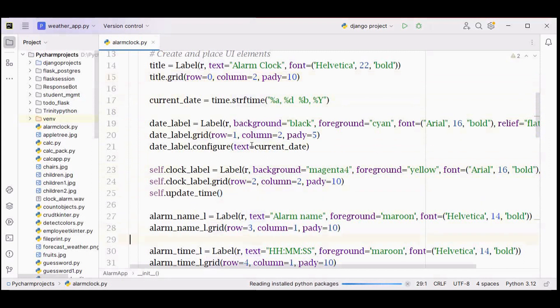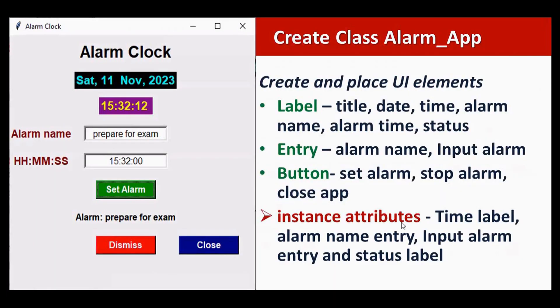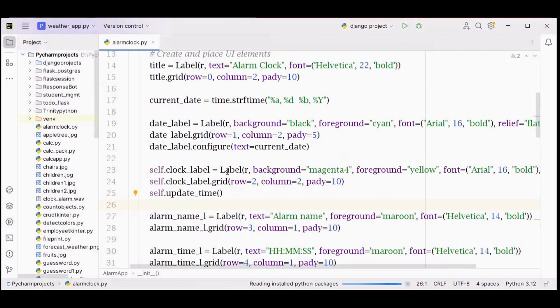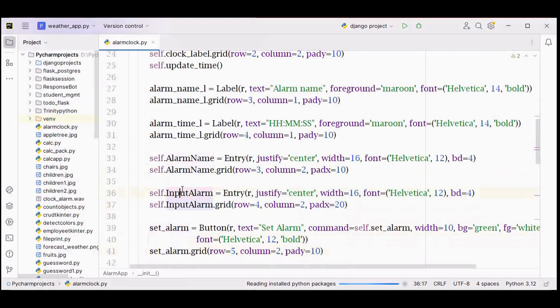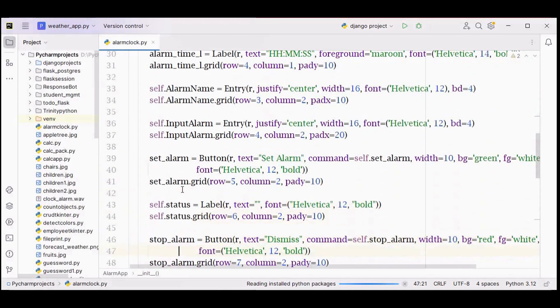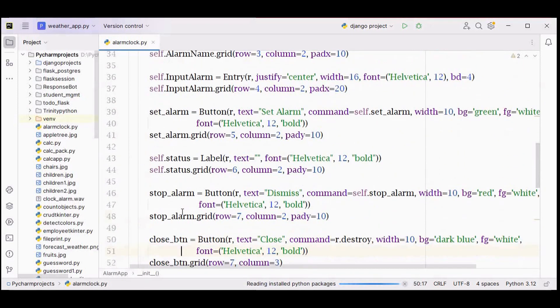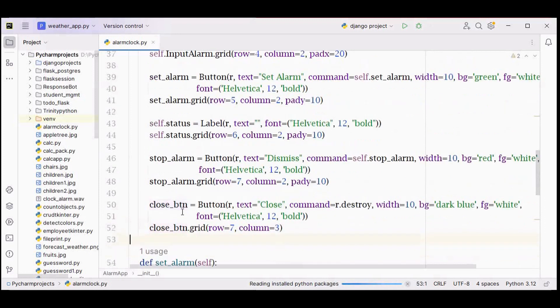I got the current date and it is placed in this date label. As I have already mentioned, this clock label - that is the time label - is made as an instance attribute, so I have used self dot. For alarm name and input alarm entry widget, as well as for the status, I have used self parameter to denote that it is an instance attribute.